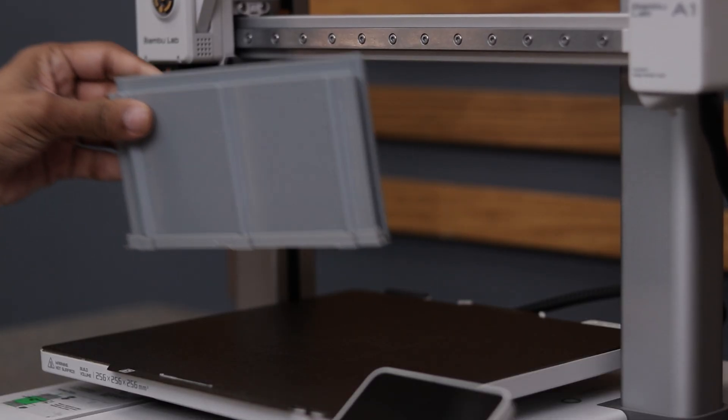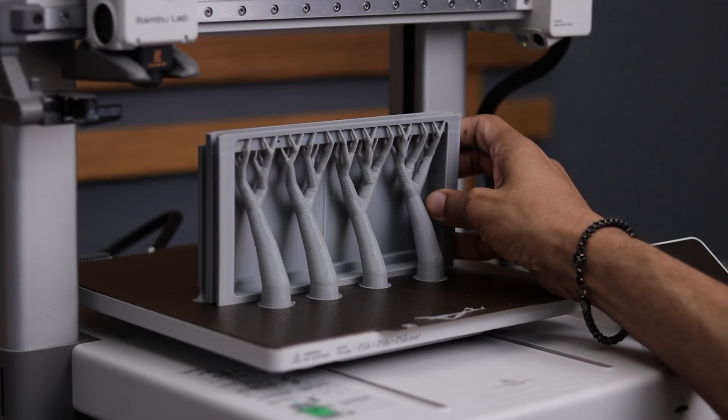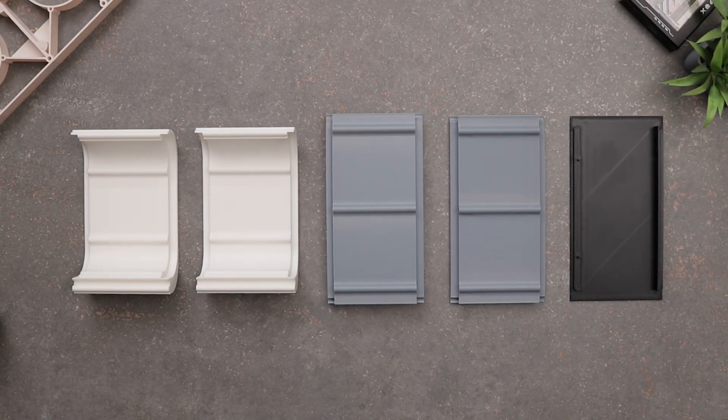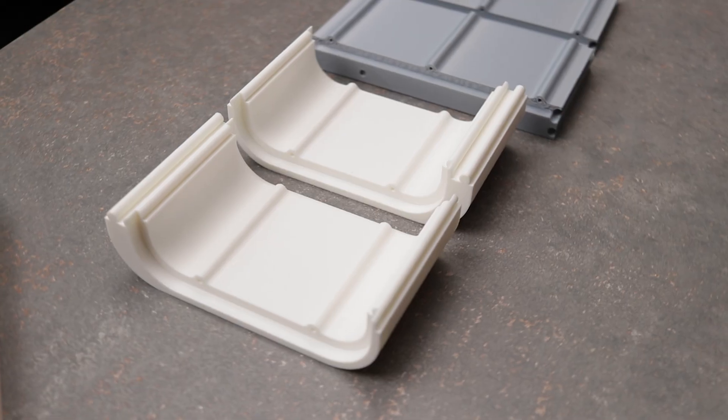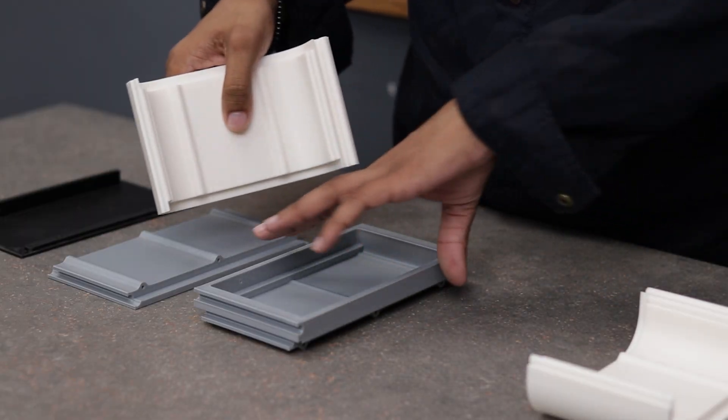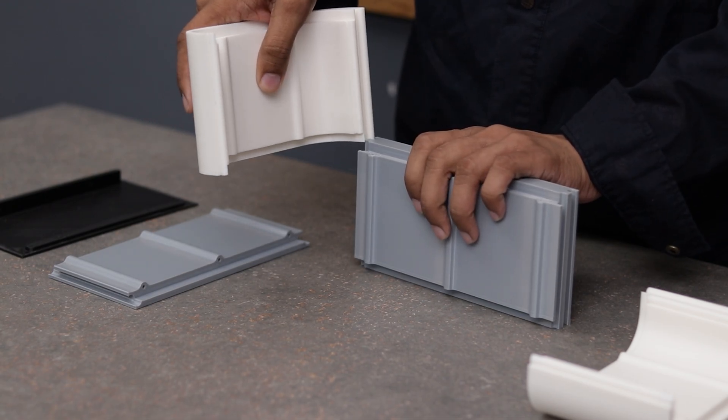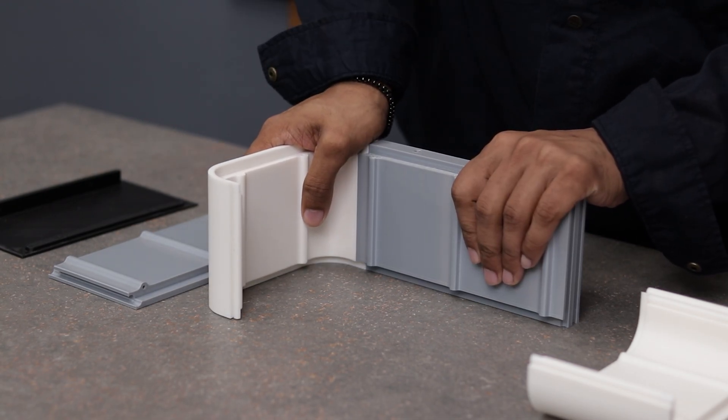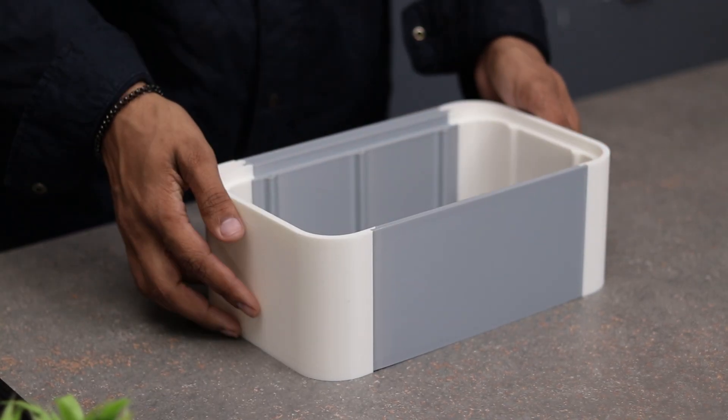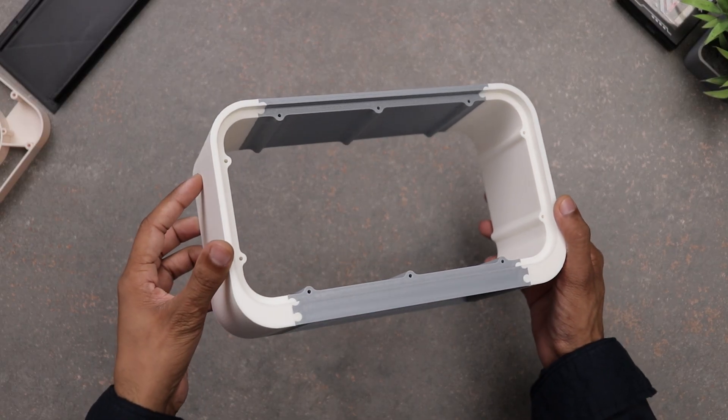These are also ready, so let's remove them from the build plate. The prints are done and they turned out super clean. So now it's time to put everything together. The assembly is pretty straightforward, just align the pieces and slide them together like a puzzle. And just like that, the main structure is ready. It looks pretty cool.